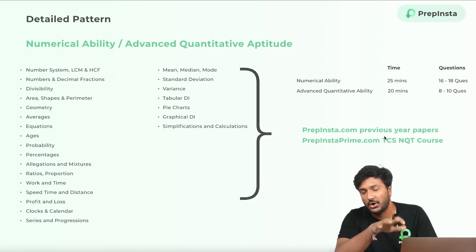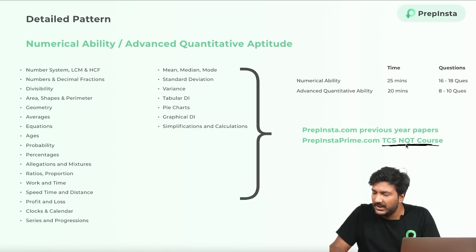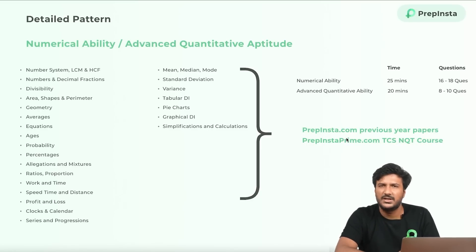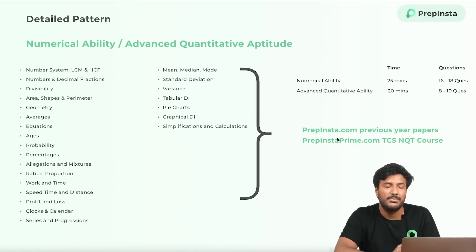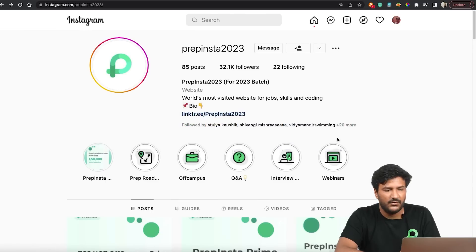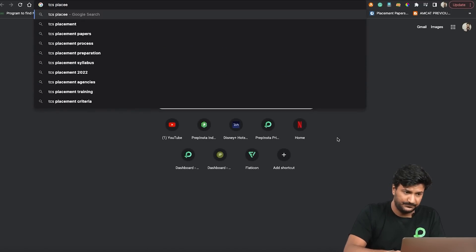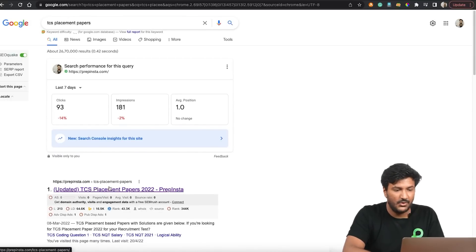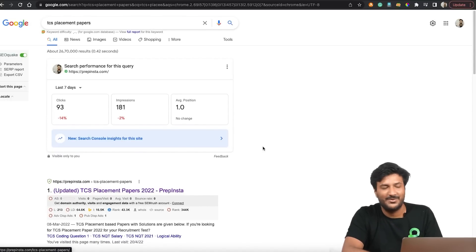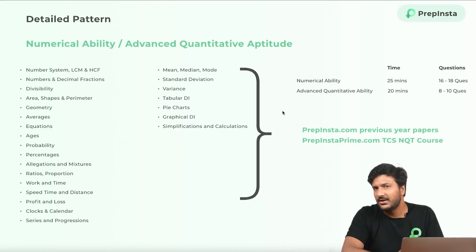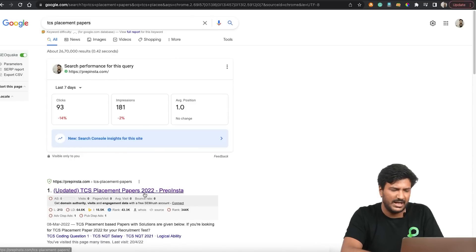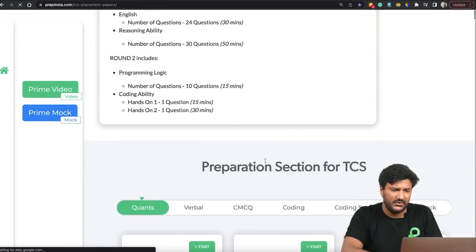All previous year papers are available on PrepInsta.com. We've also launched the TCS NQT course — 175+ courses under one subscription, approximately 200 hours of content, covering the full syllabus including coding, competitive coding, and DSA. To find placement papers, just search 'TCS placement papers' and PrepInsta's website comes up on top. You'll find all previous year papers there.